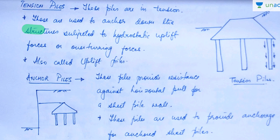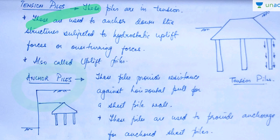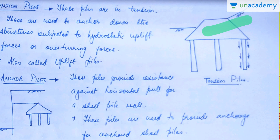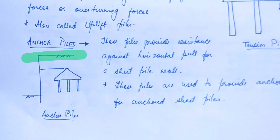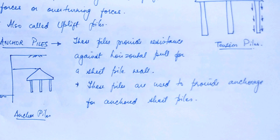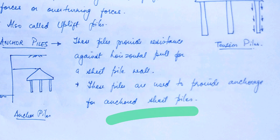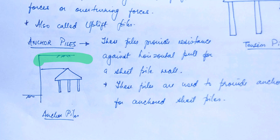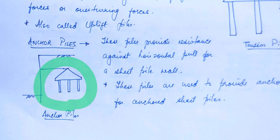There is a difference between tension piles and anchor piles. Tension piles provide anchorage by developing tension to hold the structure down. Anchor piles, on the other hand, provide resistance against horizontal pull for a sheet pile wall. They are used to provide anchorage for anchored sheet piles — the sheet pile needs anchorage and for that the anchor piles are inserted, giving anchorage to anchored sheet piles.